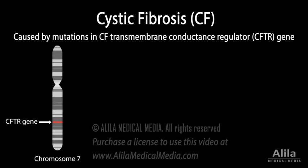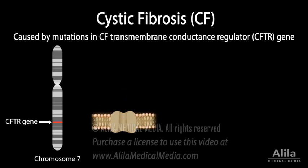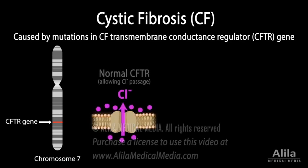CF is caused by mutations in the CF transmembrane conductance regulator, CFTR, gene. The CFTR protein encoded by this gene functions as a chloride channel allowing passage of chloride ions across cell membranes.